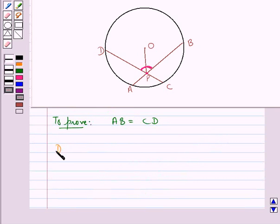For this, first we will draw OE perpendicular to chord AB and OF perpendicular to chord CD.